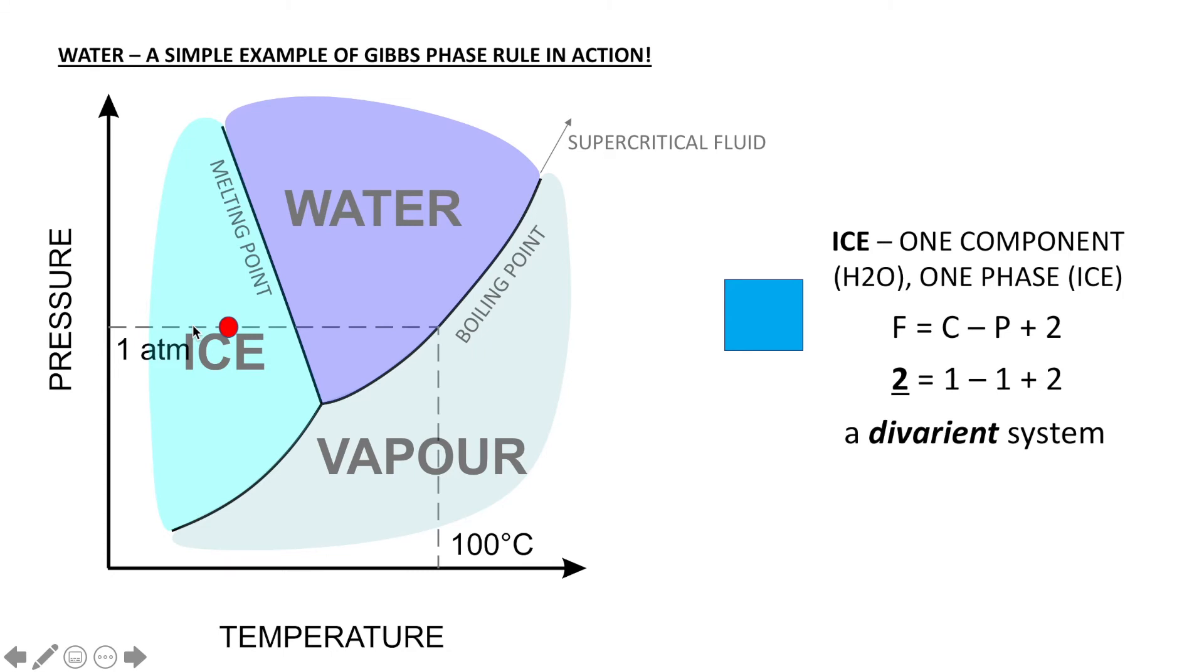As we reach the melting point of the ice, we still have a one component system, H₂O, but we now have two phases—ice and water—that exist anywhere along this line, the melting point. So now we still have one component, but we have two phases. That means we have one degree of freedom, or also known as a univariant system.